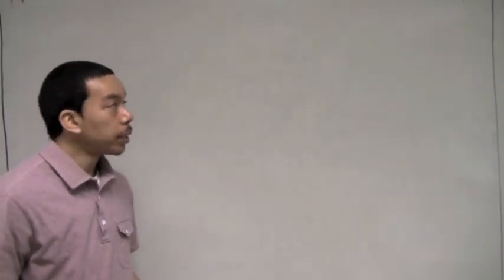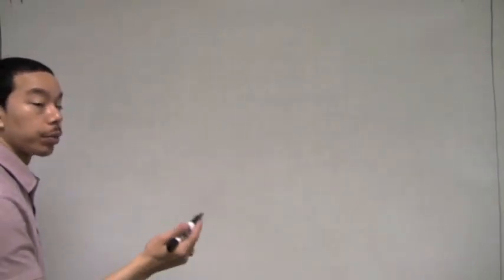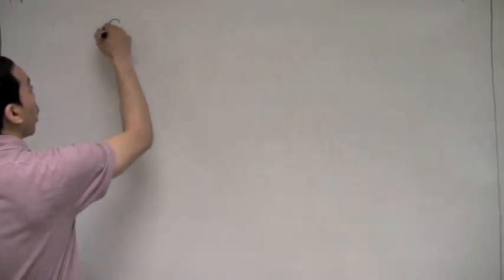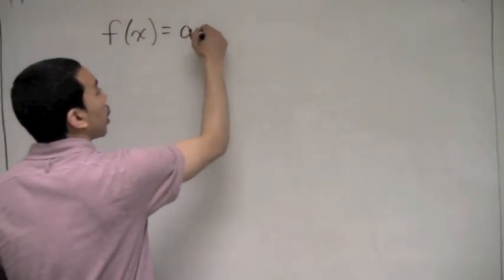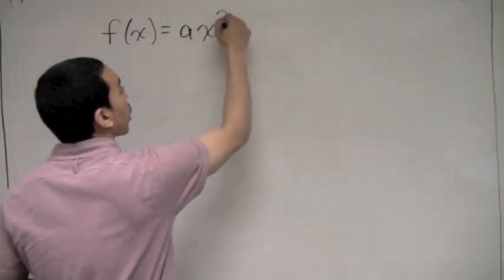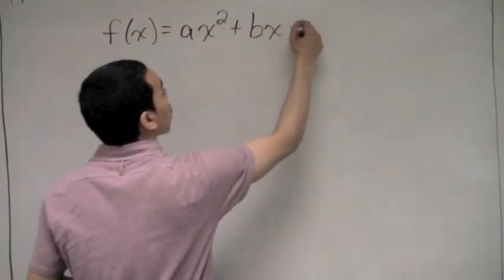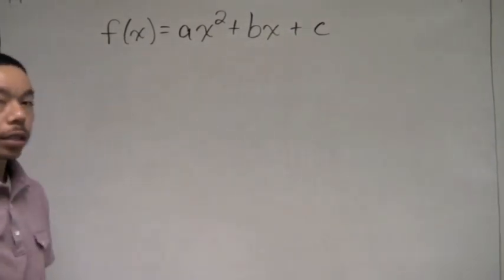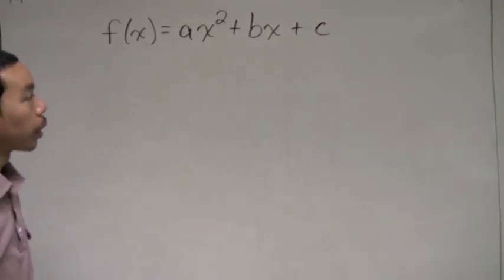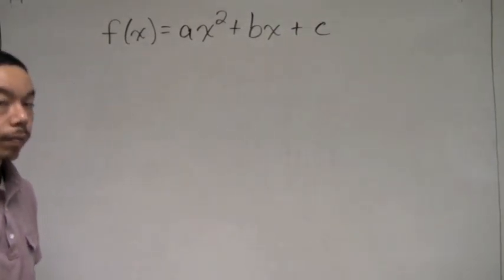Hello, everyone. Today we'll be discussing what's known as a quadratic function. A quadratic function will be in this form: f of x equals ax squared plus bx plus c.